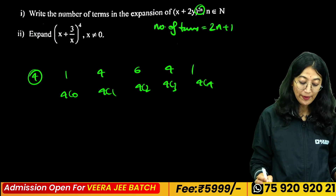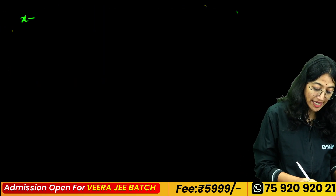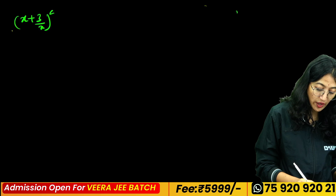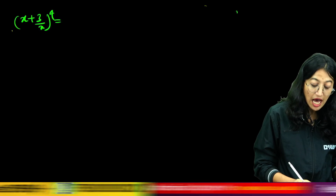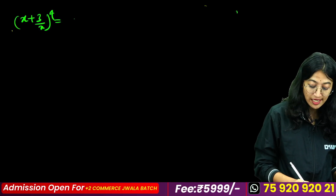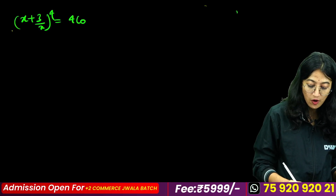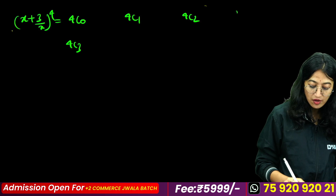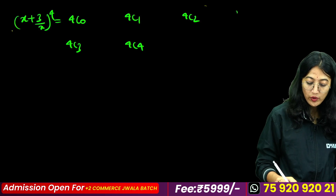We will expand (x + 3/x) whole raised to 4. Then there are 5 terms. The terms are 4C0, 4C1, 4C2, 4C3, 4C4. So the number of terms in the expansion of (x + y) raised to n is n plus 1.